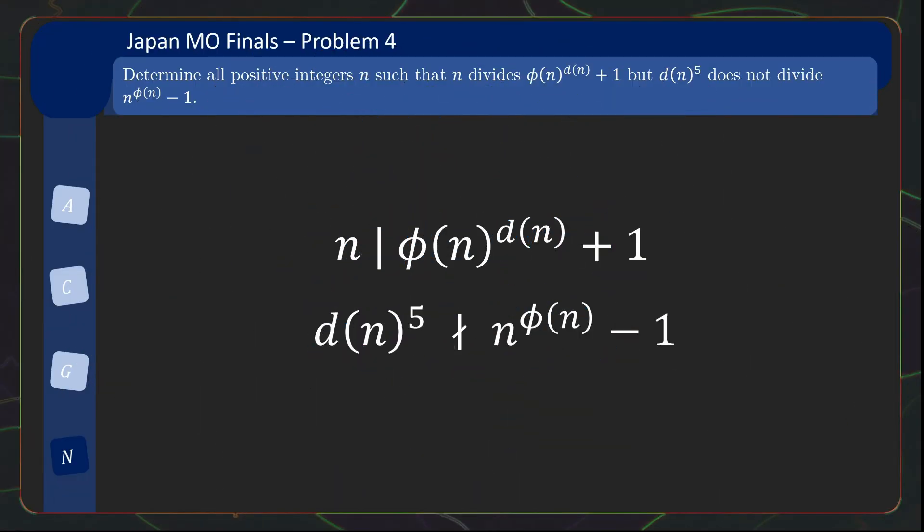Coming in 2nd place, we have a number theory problem which is pretty much a hidden gem, since it is from the Japan Math Olympiad which not many people would have tried. This problem involves finding all positive integers n which satisfy the two equations shown.